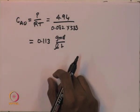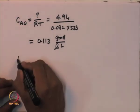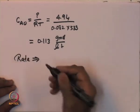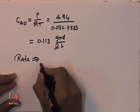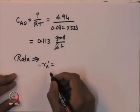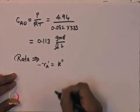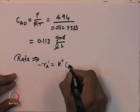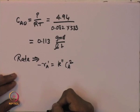The next step is to look at the rate law. Since it is a second order reaction, the rate law is: −r_A′ = k″ · C_A², which is the second order reaction rate expression.